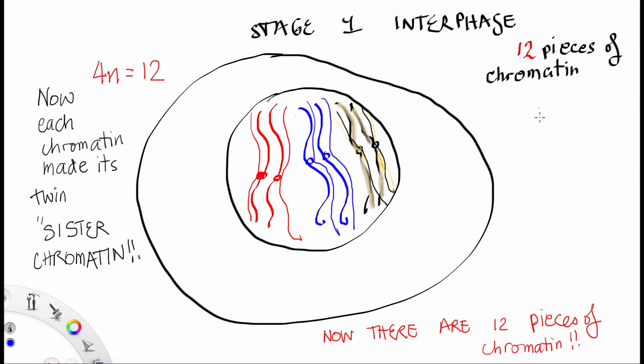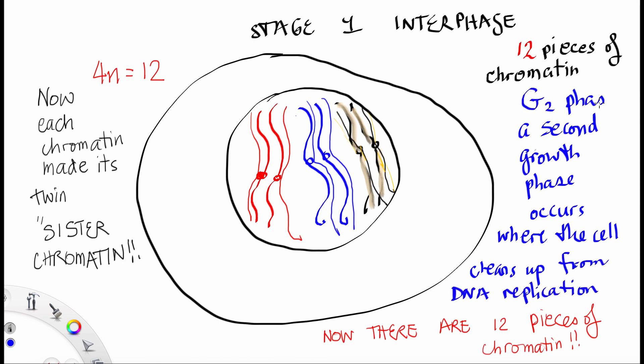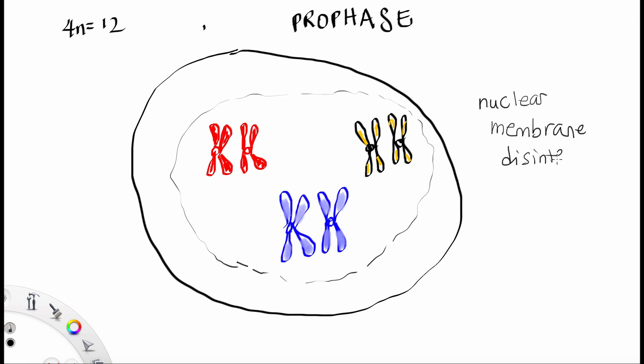The final part of interphase is a second growth phase, where basically the cell cleans up after DNA replication. And it begins to wind up each of these chromatin pieces. And it winds them all up until finally they look like this. And now we're in prophase. In prophase, the nuclear membrane disintegrates and the chromosomes are visible now.